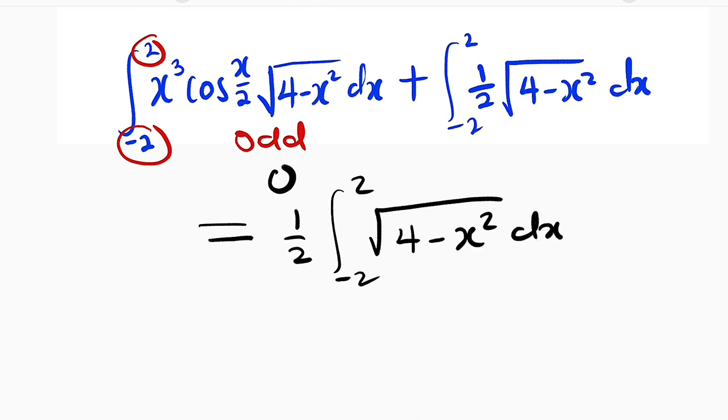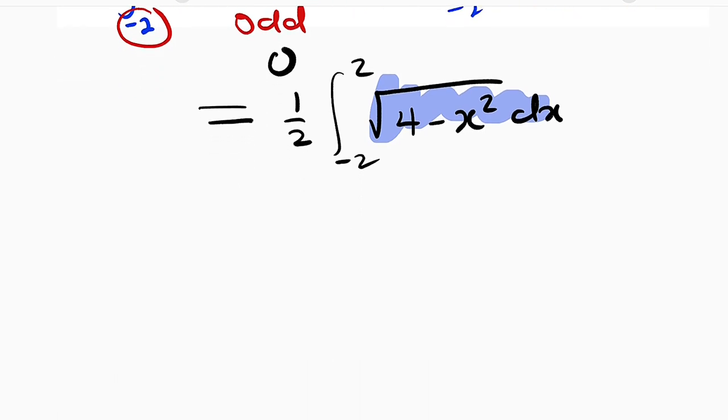But the question is do we really need calculus in order to simplify this? No, because once you understand definite integrals you know that it is talking about area under a curve. And if you graph square root of 4 minus x squared it is exactly a semicircle of radius 2 units. This is a semicircle from negative 2 to 2. So we are looking for the area here.